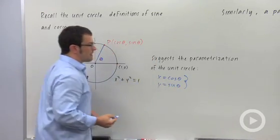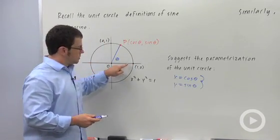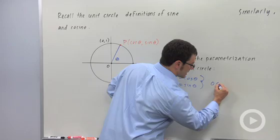And of course, you can get the entire circle just by having theta go from 0 to 2π. You can have it do more, but this is enough.